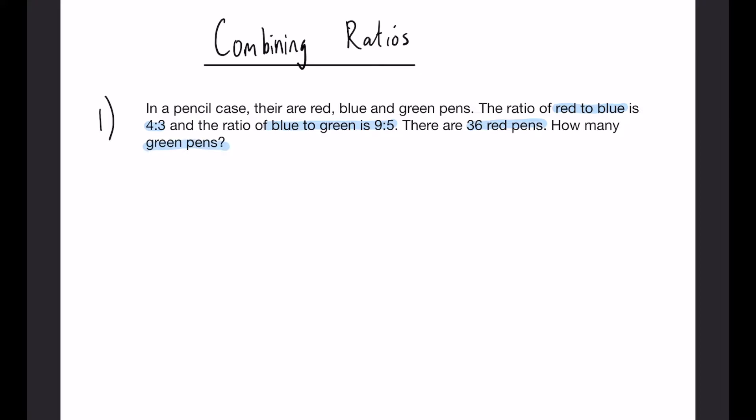So first of all, make a note of the three variables we have. We have red, we have blue and we have green. Now the ratios we know are red to blue is 4 to 3 and blue to green is 9 to 5.